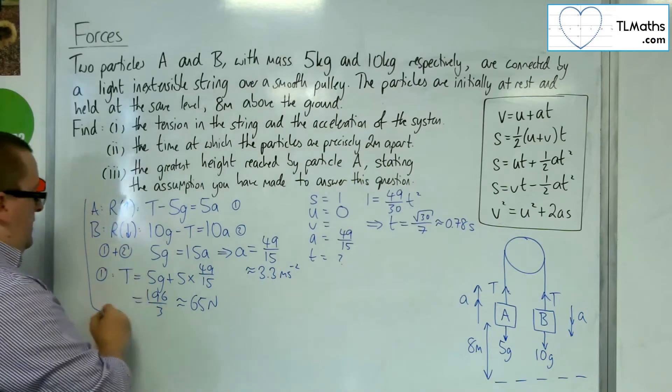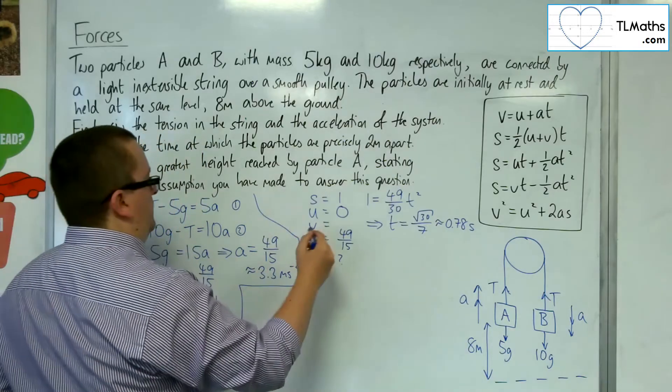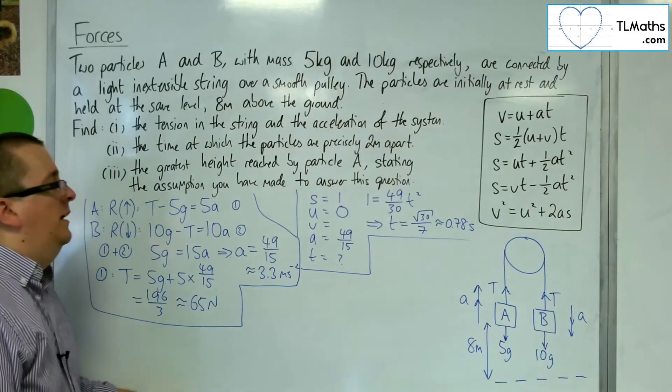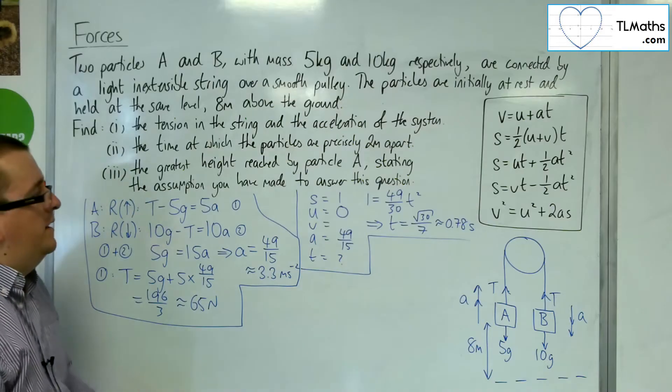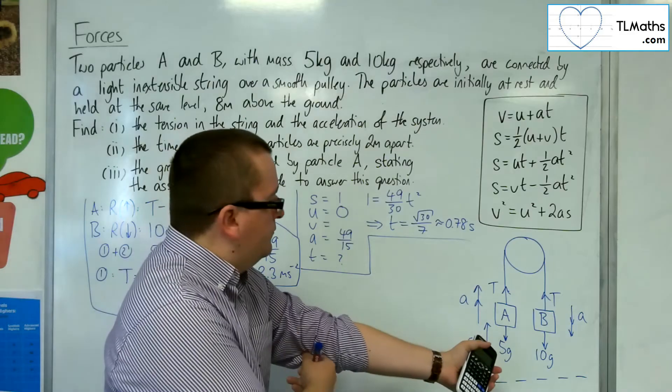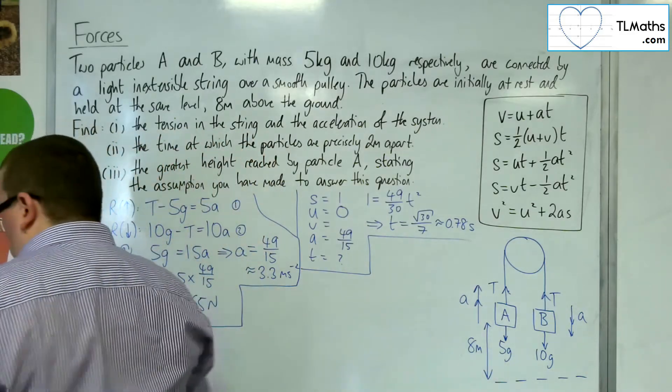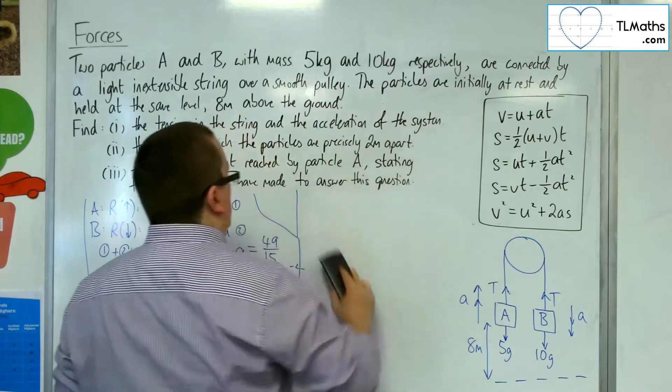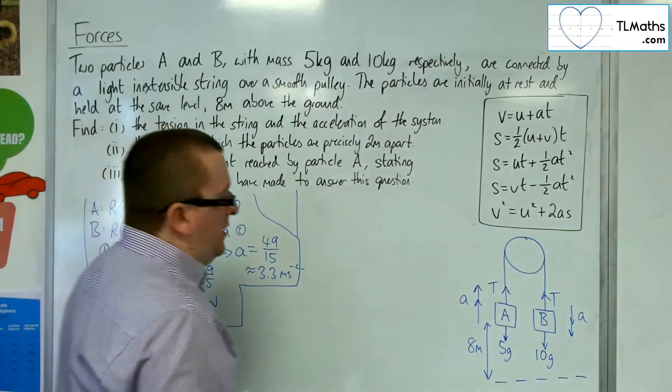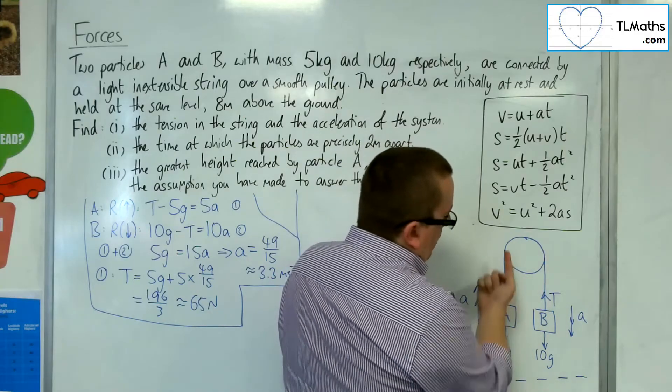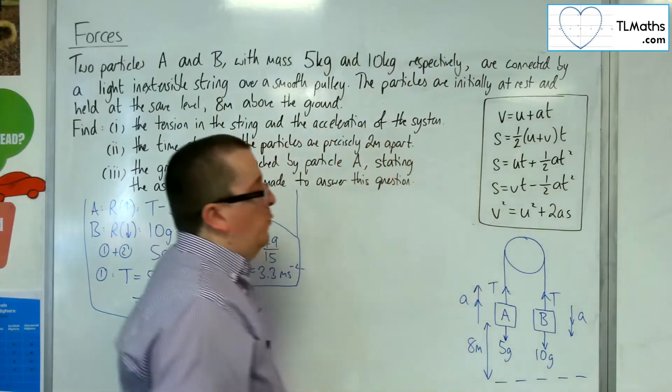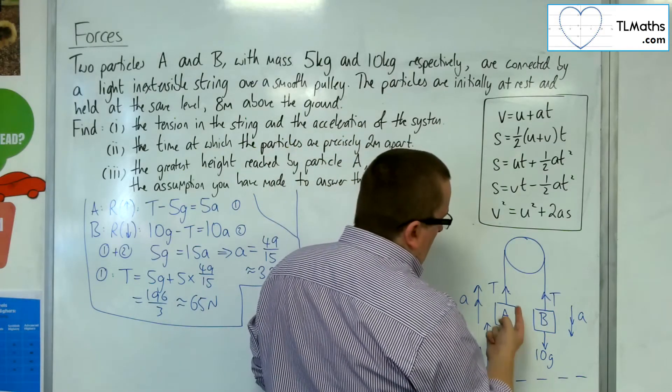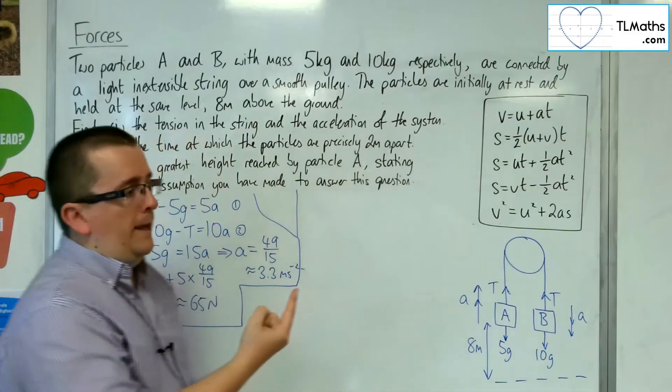Okay, right, so let's give myself a little bit of space. Right. So, the last question. The greatest height reached by particle A? Stating the assumption you have made to answer this question. Right, so, what I'll actually do is I'll give myself a little bit more space by erasing this bit. Okay, so I'll just give myself that space. Right, now, particle A is going to shoot upwards, because it's being pulled upwards by the fact that B is going downwards. Now, when B hits the ground, okay, so when B travels 8 meters down, A will have traveled 8 meters up. Okay. Now,